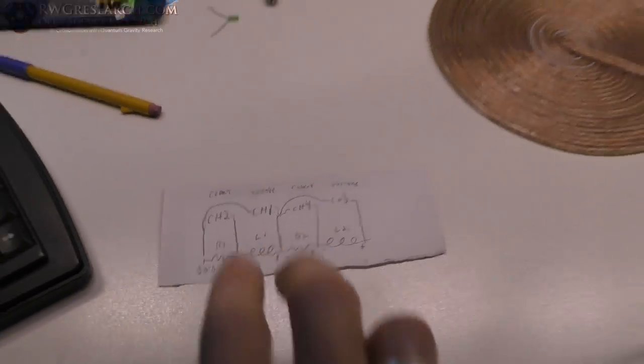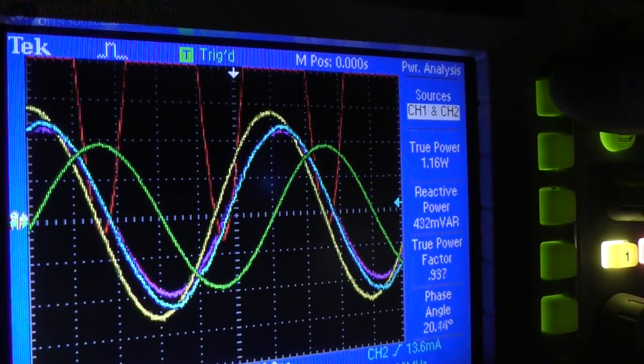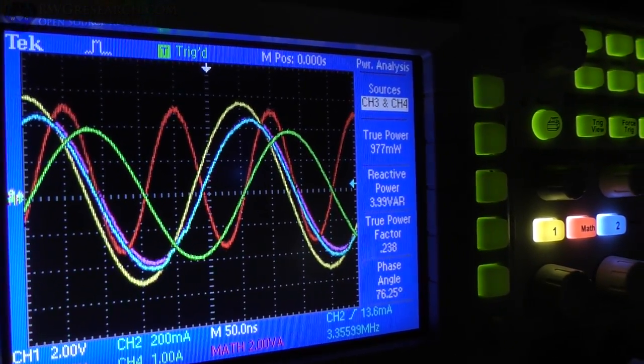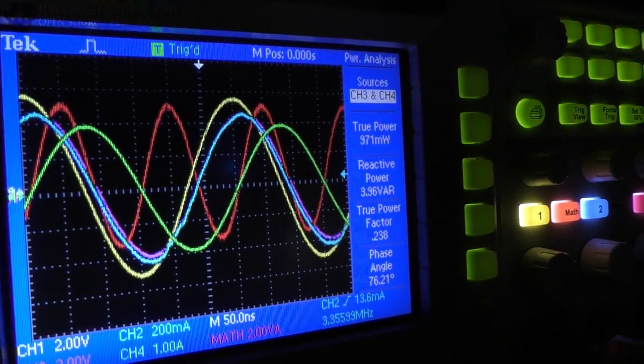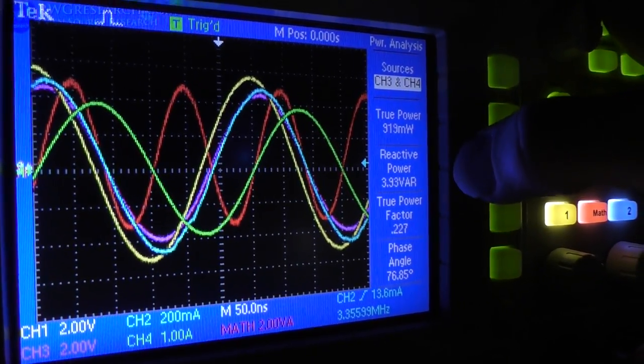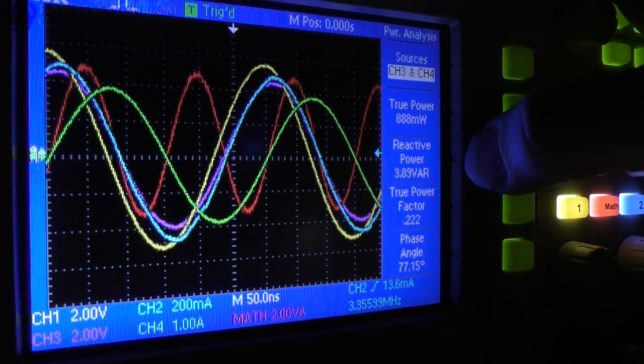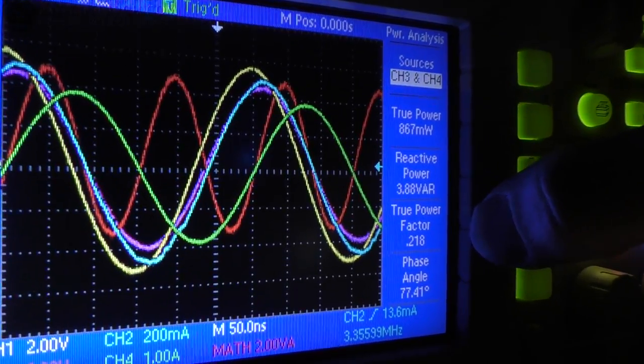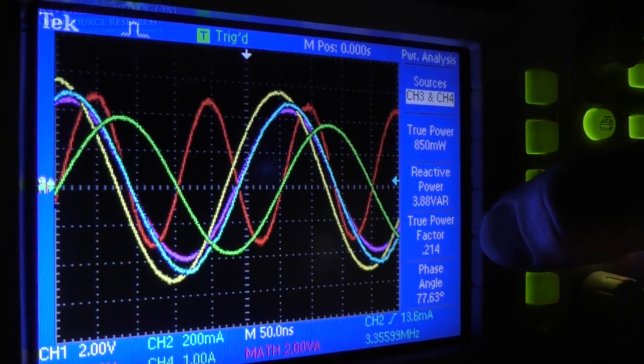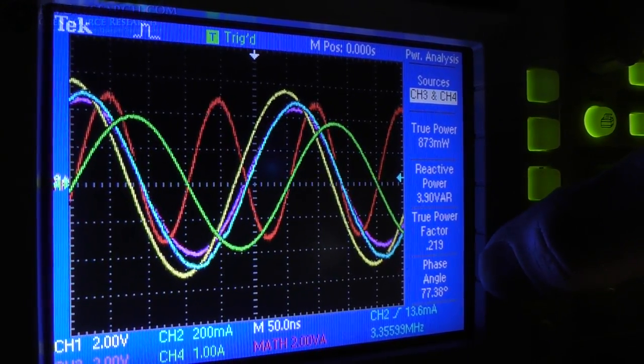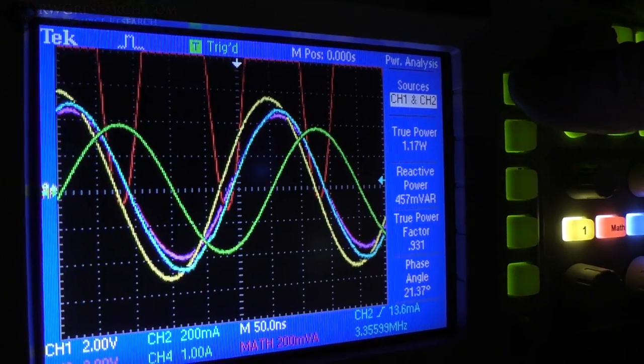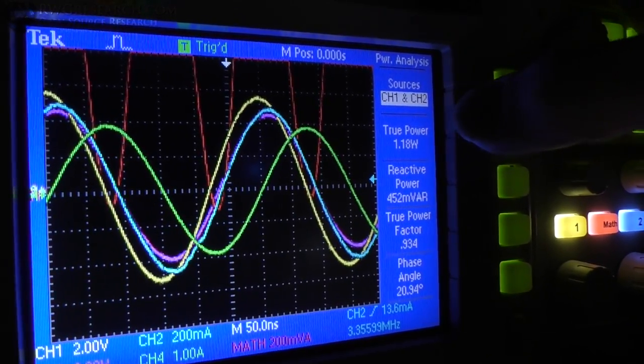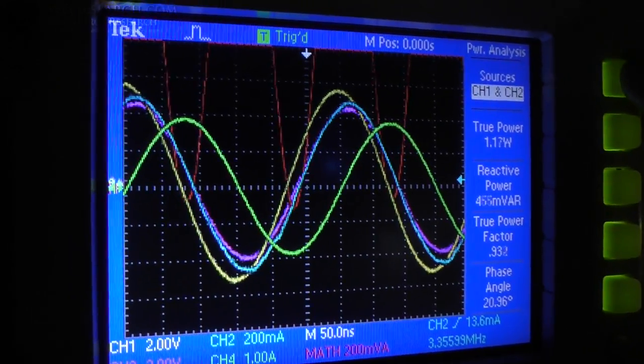So now we're going to go and we're going to look at channels 3 and 4, which is the other half of the circuit. We have about 90 milliwatts. I'm sorry, 900 milliwatts, almost one watt, right? Now our reactive power is 3.89. Now look at our true power factor. It's at 0.2. It's on the other side of the scale. All the way down to nothing. More towards 0. And the phase angle is 77, right? More towards 90. So let's go back. Phase angle is 21. All right. Channel 1. I'll just let you look at the numbers. Here we go. Channel 1. Channel 1. True power, 1.6.